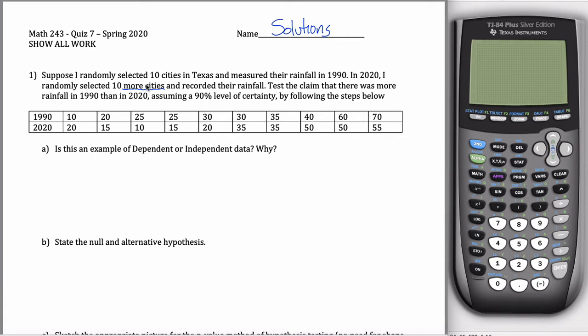The fact that these are different cities here is telling us that we have independent data. It's not like I went back to the exact same cities, in which case I would have the matched pairs design. I'm going to test the claim that there was more rainfall in 1990 than in 2020. So more is kind of telling me it's going to be a right-tailed test here, assuming 90% level of certainty, and we're going to follow the steps below.